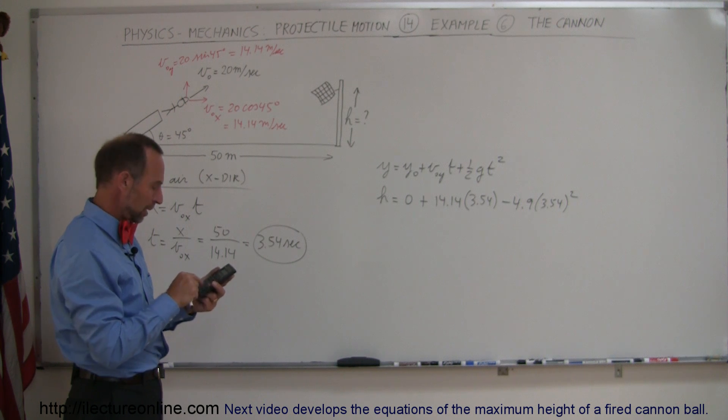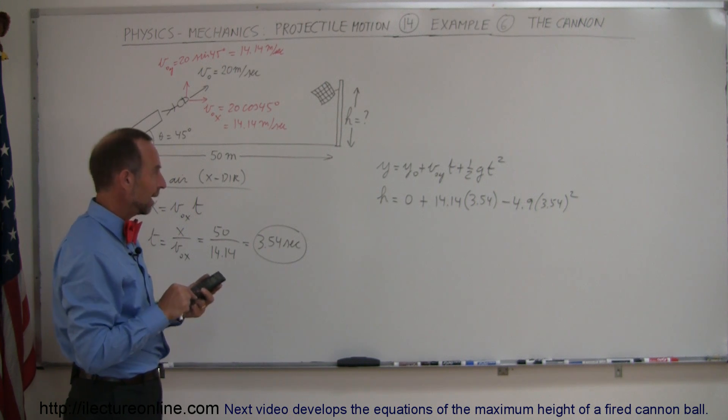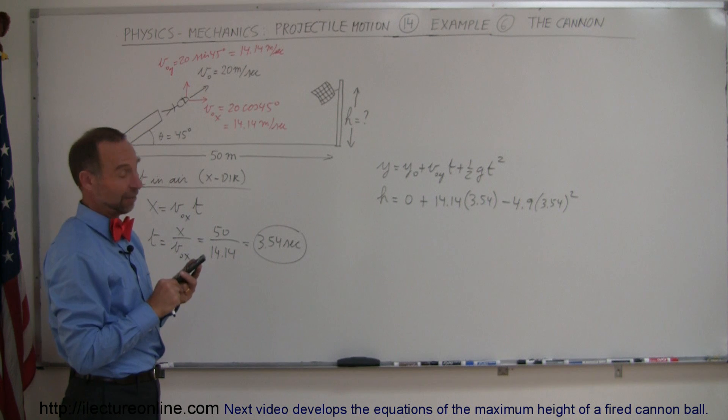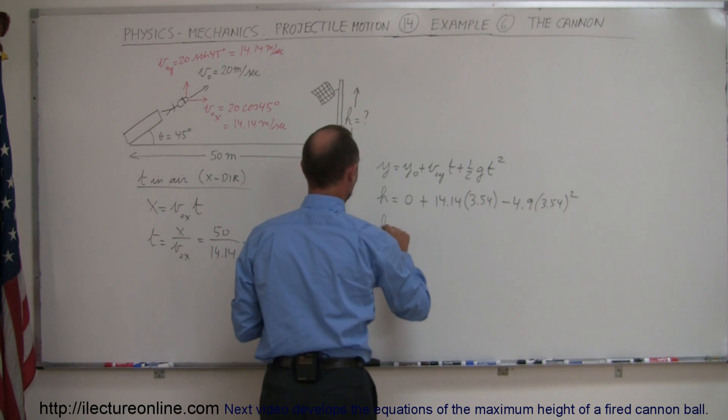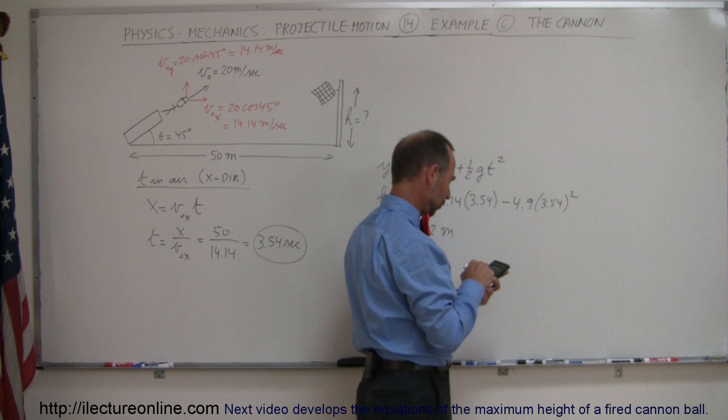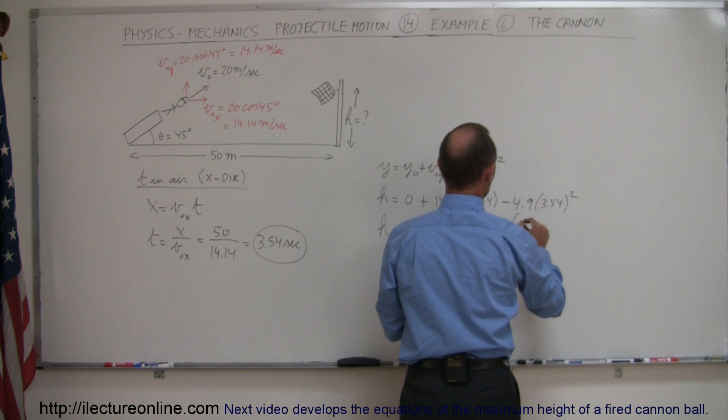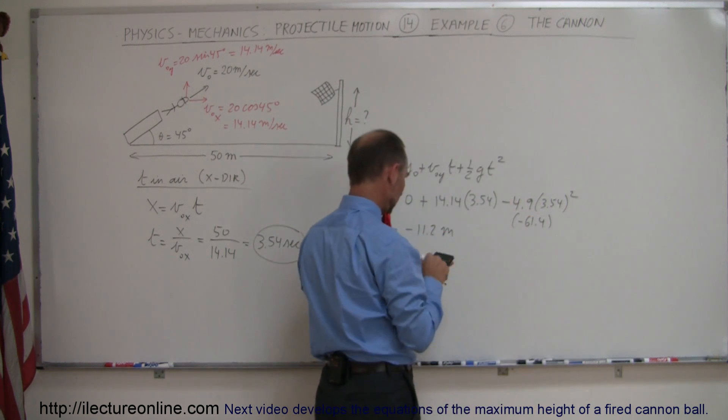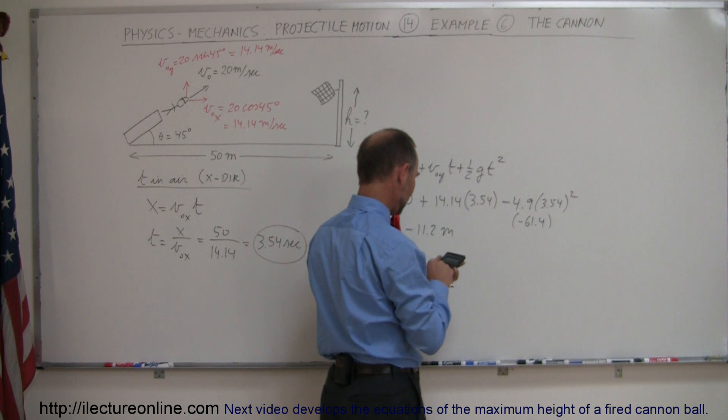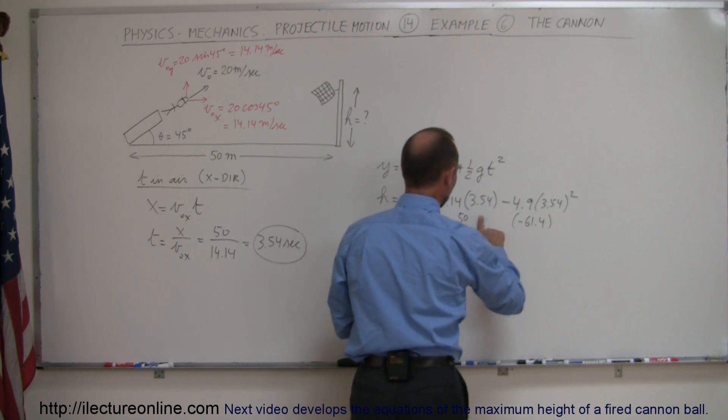So we square that number, we multiply times 4.9, that is minus. So we subtract that from plus the quantity 14.14 times 3.54 equals, and we have a problem. Height is equal to minus 11.2 meters. Because this quantity right here, 3.54 squared times 4.9 is already, this would be like a minus 61.4, and this quantity right here, 14.14 times 3.54 is only 50, and so 50 minus that quantity right there is less than...